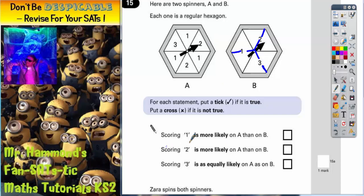So, first statement. Scoring a one is more likely on A than on B. Well, if you look at spinner A there is one, two, three ones out of a possible six.